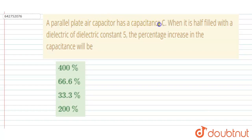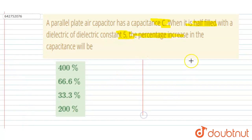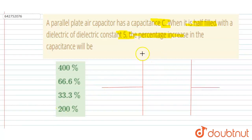Hello everyone. A parallel plate air capacitor has capacitance C. When it is half filled with a dielectric of dielectric constant 5, the percentage increase in capacitance will be? So let's suppose this is the capacitor with capacitance equal to C, as given. Now d/2 distance is filled with a dielectric of dielectric constant 5.